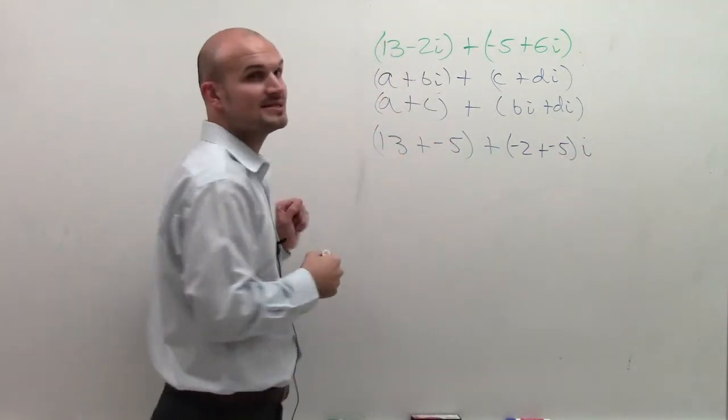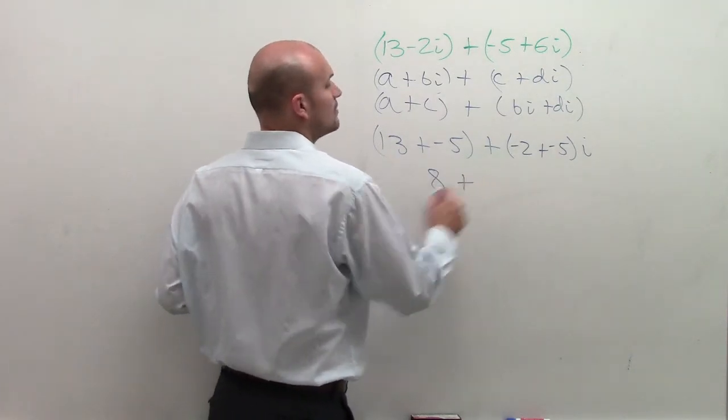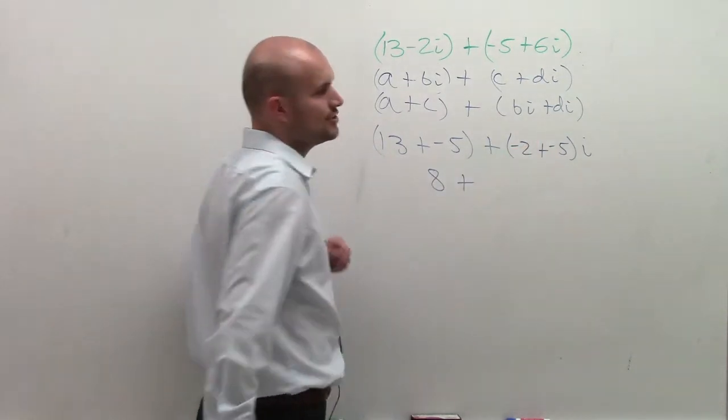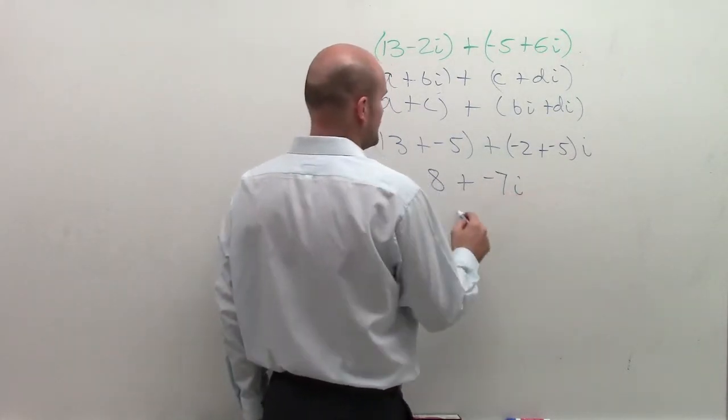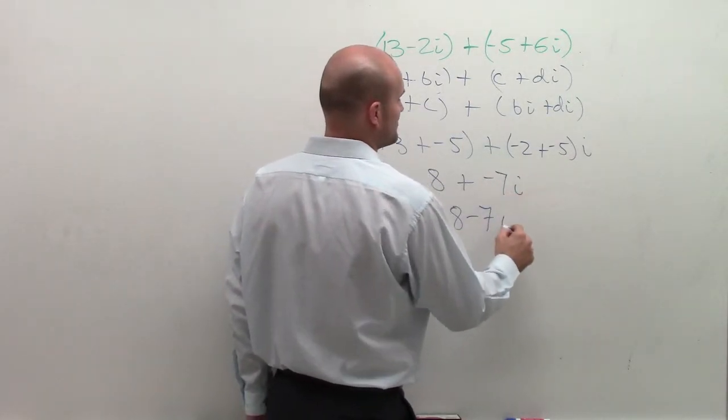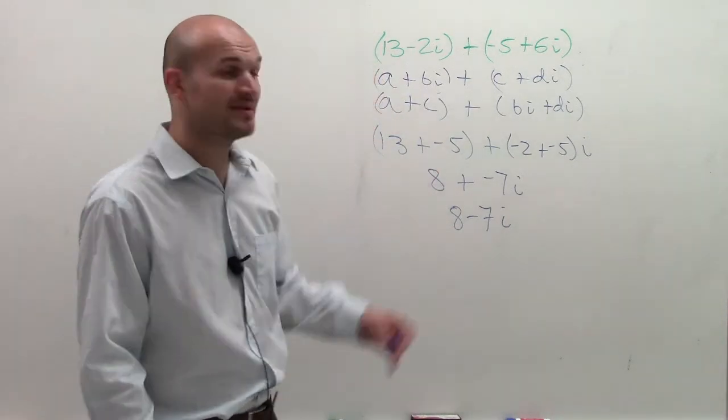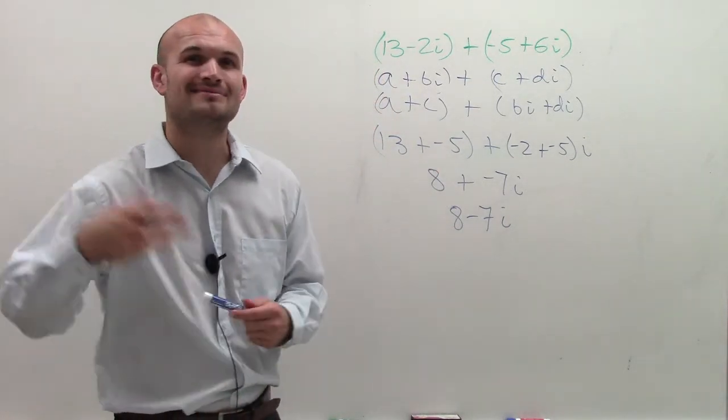So 13 plus negative 5 is going to be 8. And then negative 2 plus a negative 5 gives me negative 7i, which we can then rewrite as 8 minus 7i. And there you go. Complex number written in standard form. Added it up. Done.